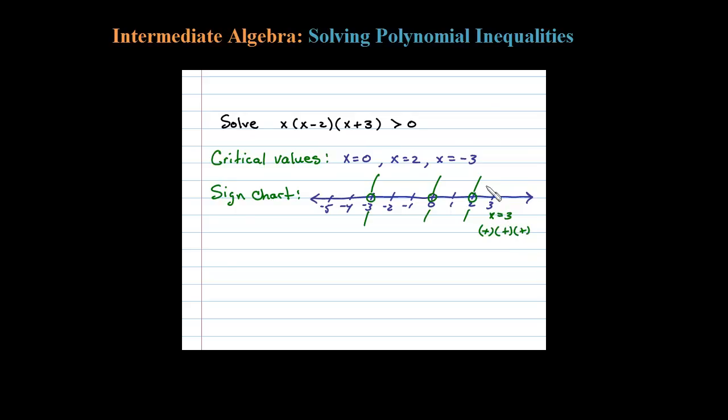There. Let's test x equals 1. When I plug in 1, I'll have a positive number. When I plug in 1 here, I'll have a negative number. And when I plug in 1 here, I have a positive number. So the result will be negative. Let's choose a value here, say negative 1. Choose any value in the interval, you should get the same plus or minus result.